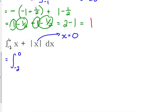So, we go from negative two to zero. We change the sign. Plus, then we go from zero to six. We keep the sign the same. We just drop the absolute value.